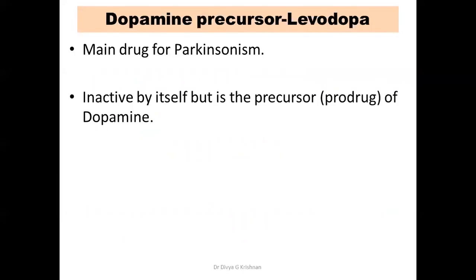The first drug used for treating Parkinsonism is levodopa, the dopamine precursor. It is a pro-drug — inactive by itself but converted to dopamine inside the body. The reason we give a precursor rather than dopamine itself is that the site of action must be in the brain, but dopamine cannot cross the blood-brain barrier. Hence we give levodopa, which can cross the blood-brain barrier.